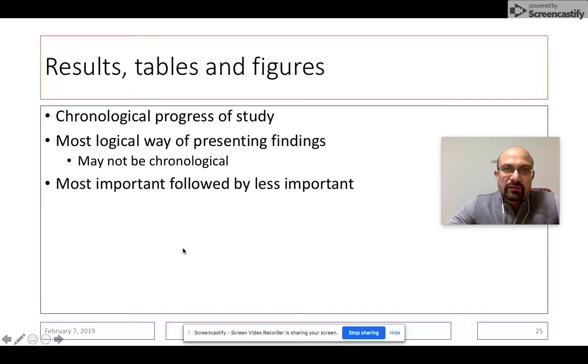So I would also talk to you now how to develop your tables and figures in the next part of this video. So when you are writing the results section, there are three ways to approach it. One, that you use the chronological progress of the study. So while you are describing the results, you could just follow the chronological progress. What came first, you describe first. What came later, you describe later.